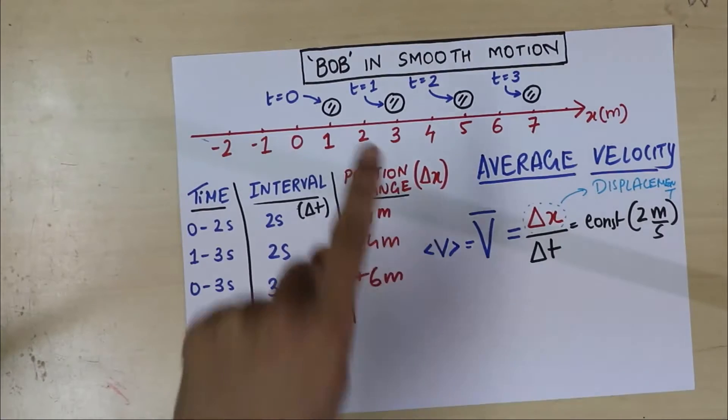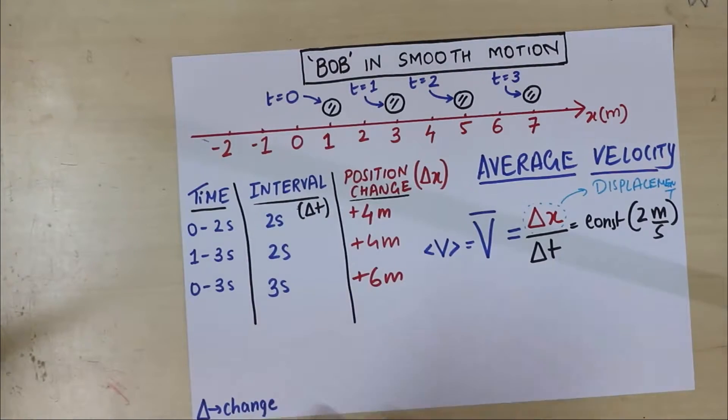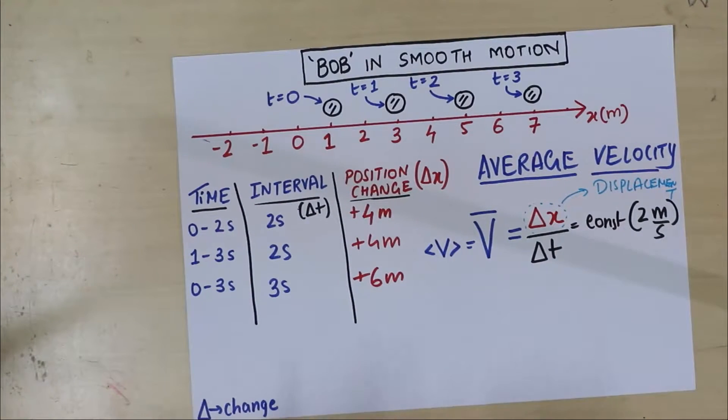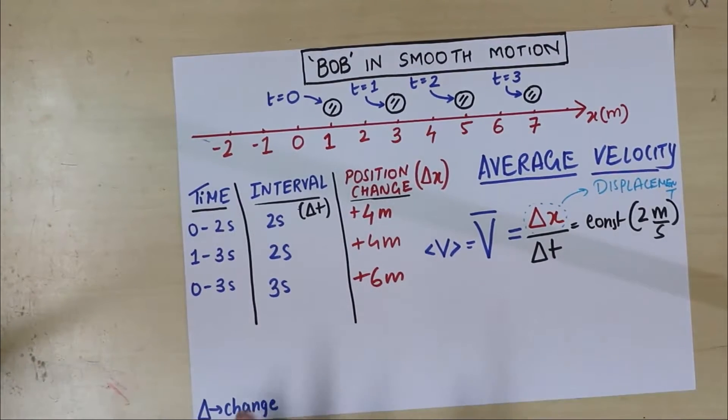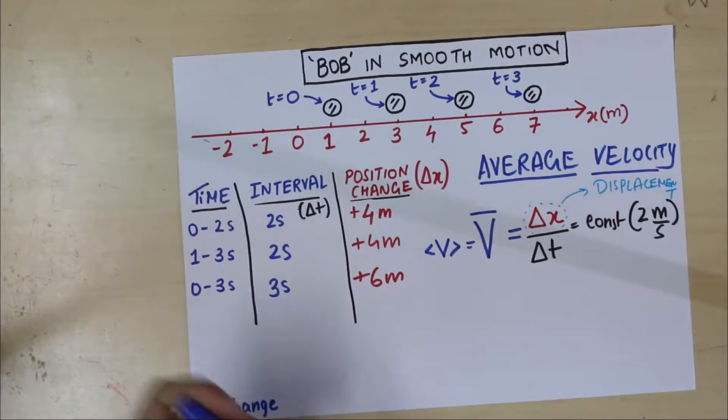Change in position is what we call as displacement. So in this example, average velocity is a constant. It's not changing. It remains 2 meters per second. So, can we build the equation now? Yes. Yes, we can. Let's see. How do we build the equation? To build the equation, what we will do is, we will consider the initial time as t equal to 0.